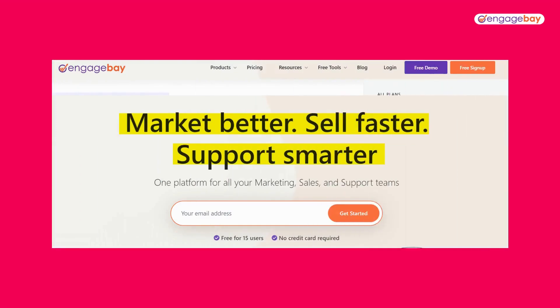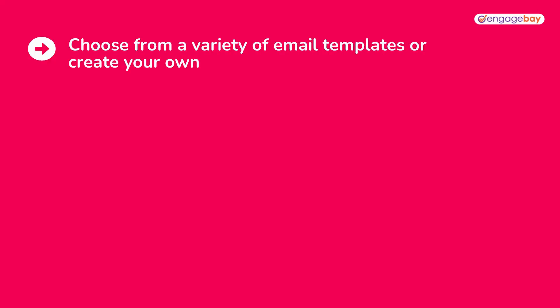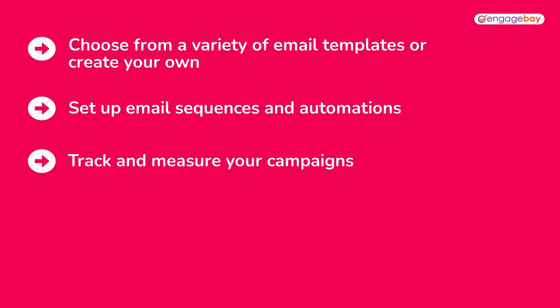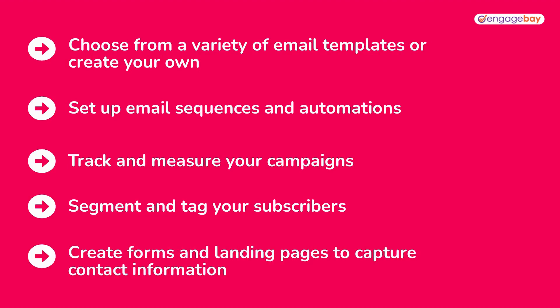What if there was a way to get the best of ConvertKit and MailChimp and also make them even better? There is. It's EngageBay. With EngageBay CRM, which you can use for free by the way, you can do everything the alternatives can do and more. You can choose from a variety of email templates or create your own, set up sequences and automations, track and measure your campaigns, segment and tag your subscribers, create forms and landing pages to capture more contact information, and so much more. And because EngageBay was designed for small businesses and solopreneurs, you can get all of this at a rate that's friendly on your company's wallet.